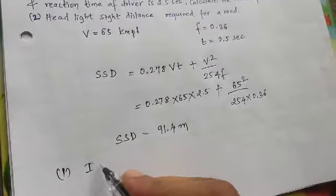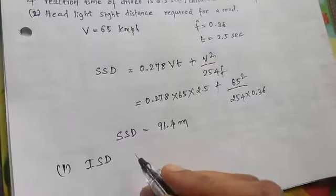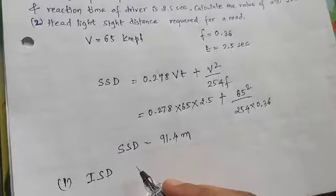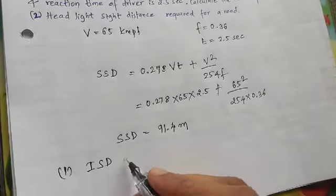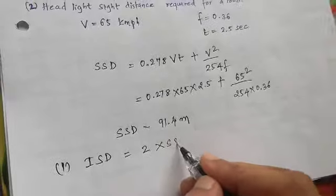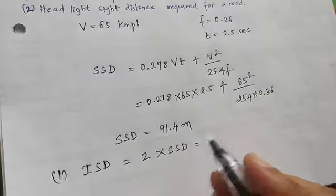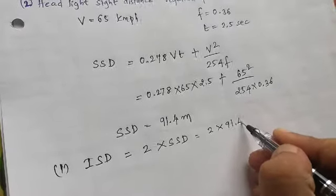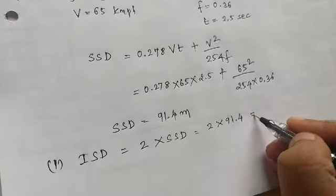So the intermediate sight distance, that's the first condition to calculate the ISD. I explained in the last class, whenever dealing with intermediate sight distance, it's always given as two times the stopping sight distance. So it's going to be 2 into 91.4 meters, which gives you around 182.8 meters, or approximately 183 meters.